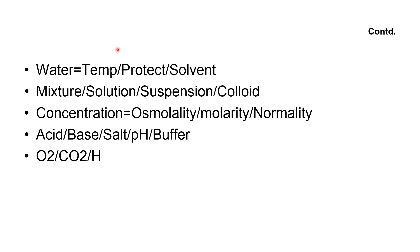Electrolytes like sodium chloride, when dissolved in water, make cations and anions that help conduct electric current in the body. Electrolytes can only work in the presence of water. Key body ions include sodium, potassium, chloride, calcium, and bicarbonate. Key electrolytes are sodium chloride, sodium bicarbonate, potassium chloride, magnesium chloride, and calcium chloride.